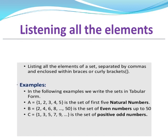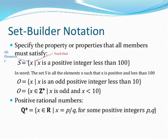C = {1, 3, 5, 7, 9, ...} is the set of positive odd numbers. It is an infinite set. So we can simply say these are positive odd numbers.